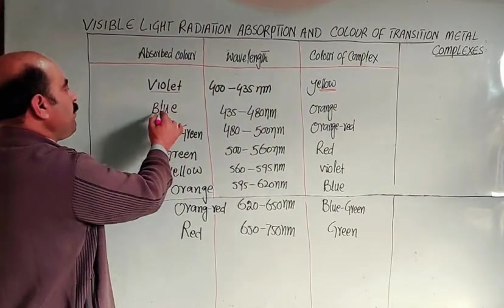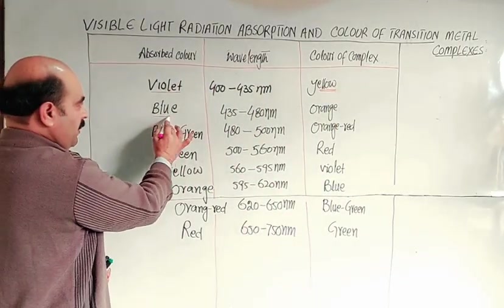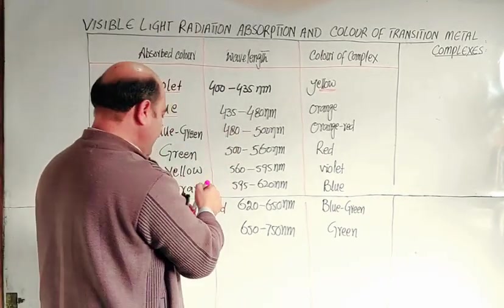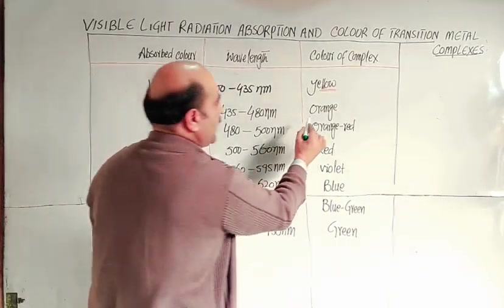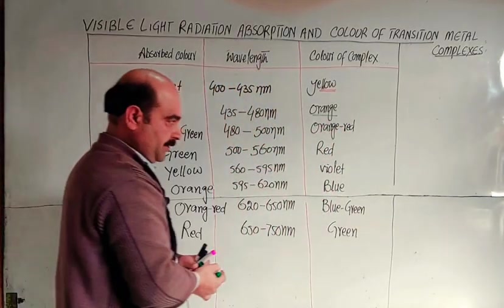If it absorbs blue color, the blue wavelength from 435 to 480 nanometer, the complex color will be orange.